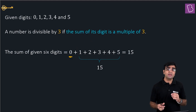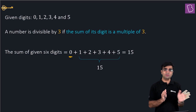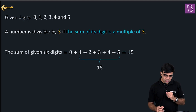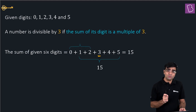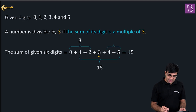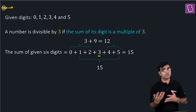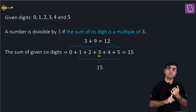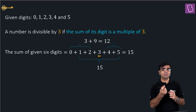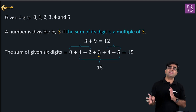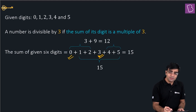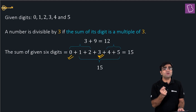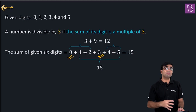So one combination is {1, 2, 3, 4, 5} — removing 0. The other case: if I remove 3, the remaining digits 0, 1, 2, 4, 5 have sum 12, which is also divisible by 3. So the two possible combinations are {1, 2, 3, 4, 5} and {0, 1, 2, 4, 5}. The key idea: since the total sum of all six digits is 15, I can only remove digits that are themselves divisible by 3 — that is, 0 and 3.